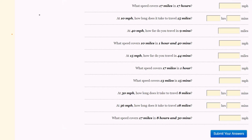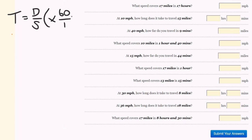So first off, to do these, I actually used this particular formula here — the speed calculation formula. Time is equal to distance over speed, times 60 over 1. And I used this each time pretty much and I got my answers, except when they were really easy. So let's have a bit of a look to start off with.